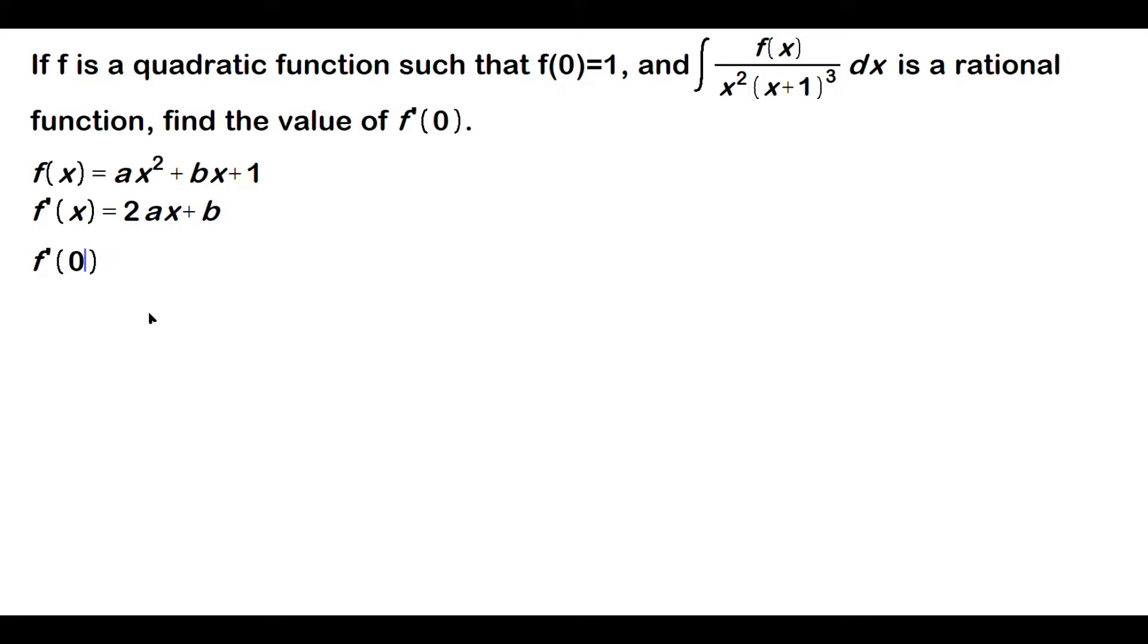That means specifically f prime of 0 would be equal to 2a times 0 plus b, but that's just equal to b. In other words, the lowercase b is our value that we are looking for, f prime of 0.